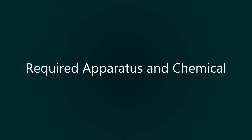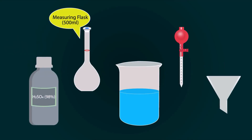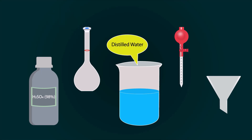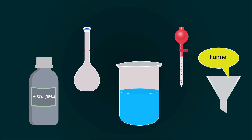Required apparatus and chemicals for this process are: 98% sulfuric acid, a volumetric flask of 500 ml, distilled water in a beaker, a pipette, and a funnel.